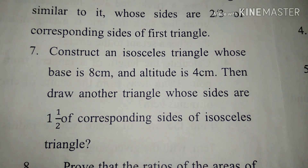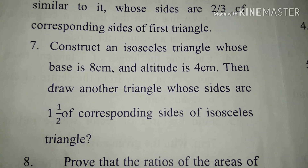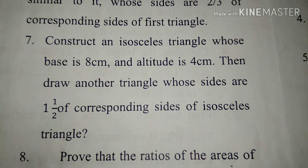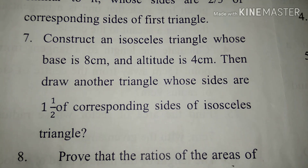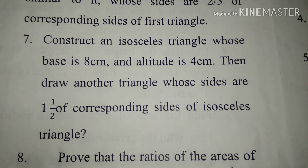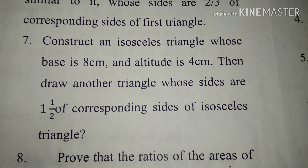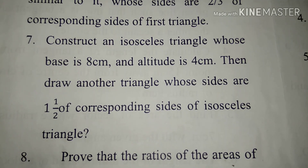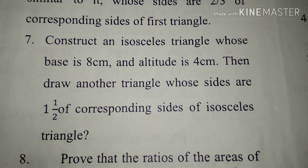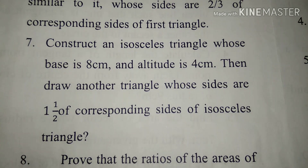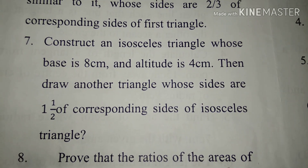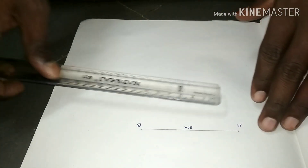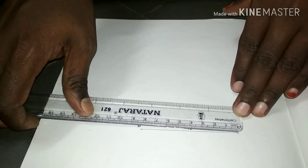Hi, today we discuss how to construct a similar triangle. For example, one sum is: construct an isosceles triangle whose base is 8 centimeters and altitude is 4 centimeters, then draw another triangle whose sides are 1 and 1/2 of the corresponding sides of the isosceles triangle. So we go to discuss how to construct a similar triangle.